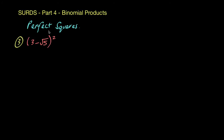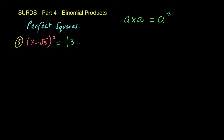Binomial products like this are called perfect squares. Just like A multiplied by A — two of the same thing multiplying onto themselves — we call it A squared. The same thing is happening here: we've got 3 minus root 5 multiplied by 3 minus root 5, so we can write it as 3 minus root 5 all squared.